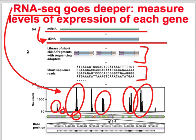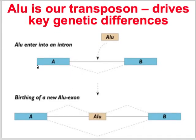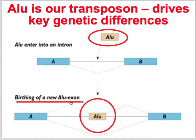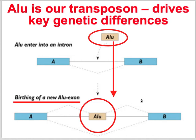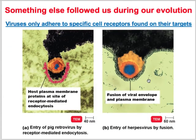ALU elements are our jumping genes — retrotransposons. Our jumping genes are good at knocking out other genes; sometimes they cause a new exon to show up, can ruin splicing sites, or make new promoters. When we look at human ancestry, a lot of our differences from our last common ancestors are because our genome is full of these elements. The chimp and bonobo genomes are not dominated by these elements the same way ours is. These elements are what we theorize led to the very rapid evolution of our species.